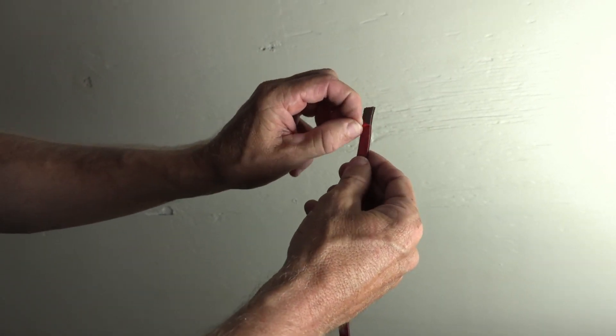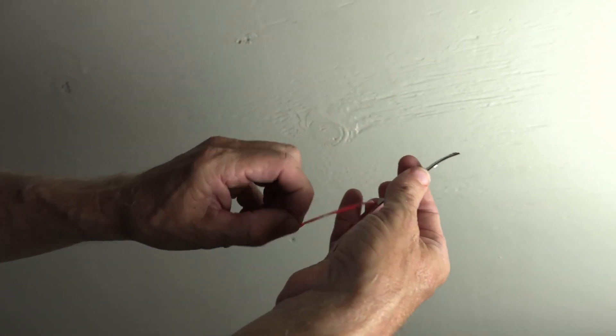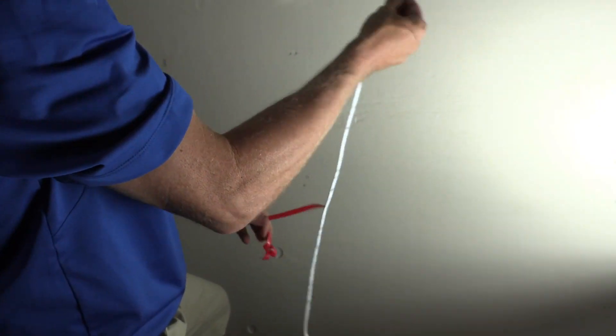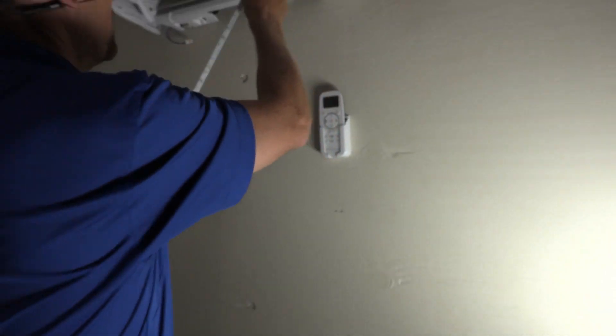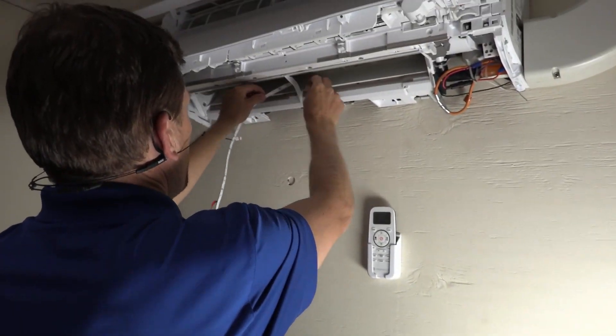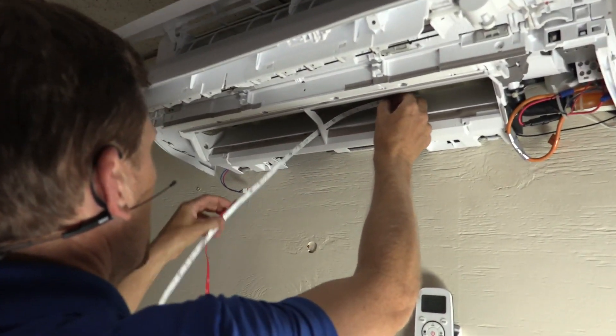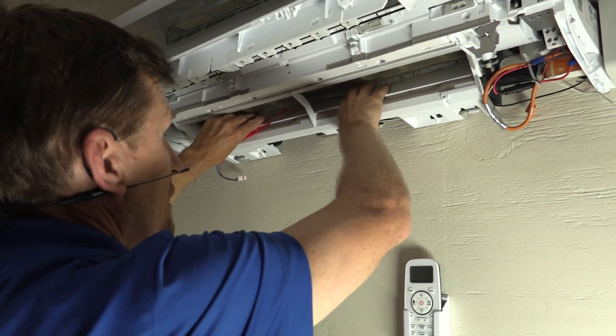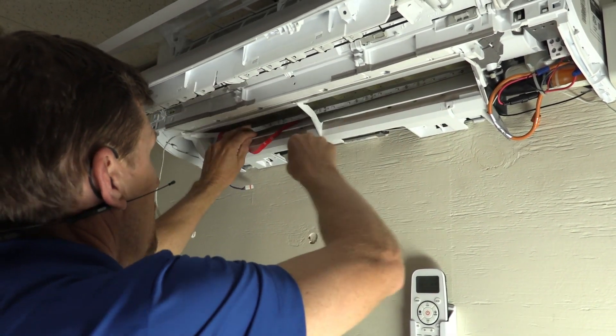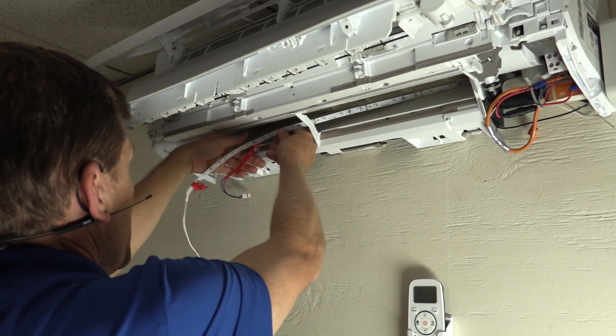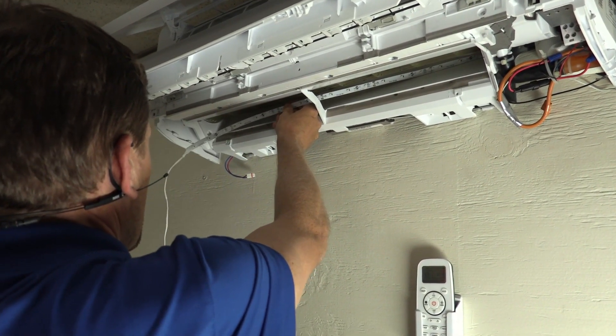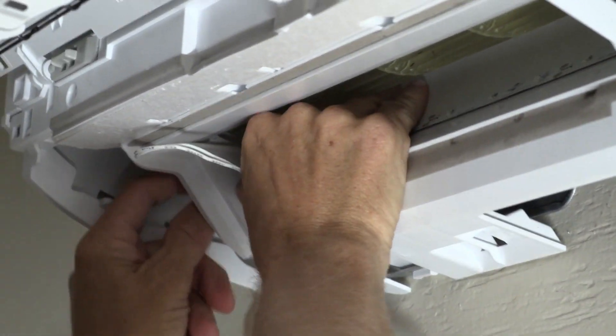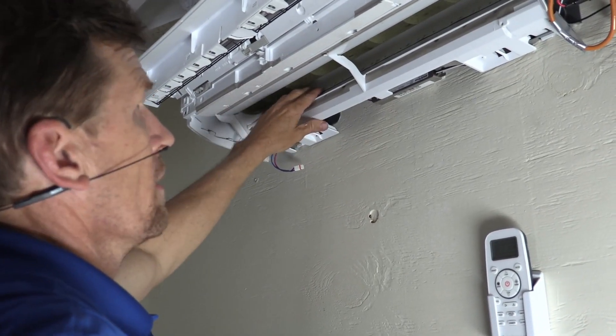We're just going to peel the backing off so we get to the adhesive. You don't want to peel it all off. You want to get to a starting point. Feed that through. So what we're doing is we're just going to adhere that and peel this all the way off. And then we're going to feed this connector through the hole that we made. It's very easy to seal that hole up if you would like to.